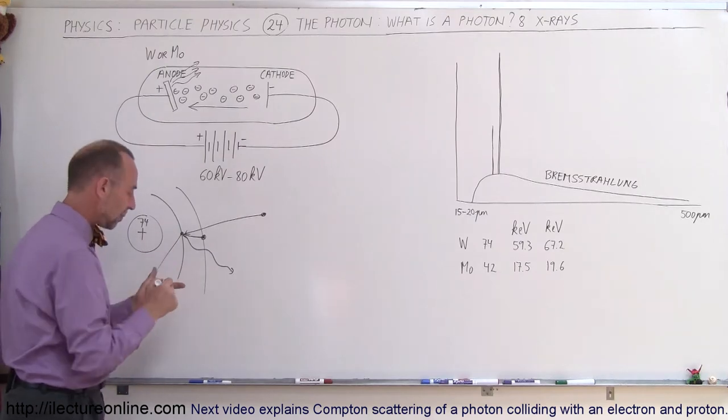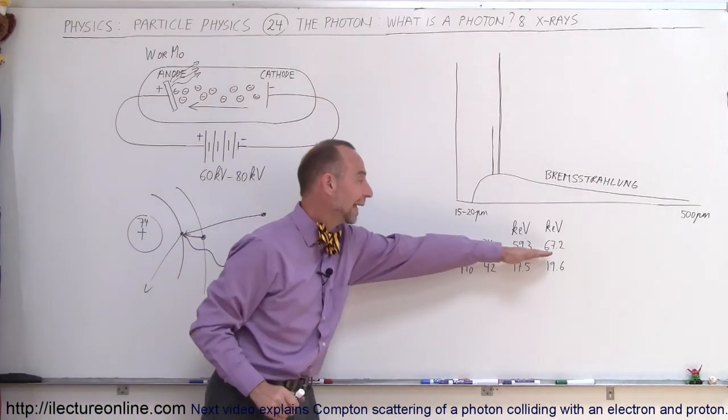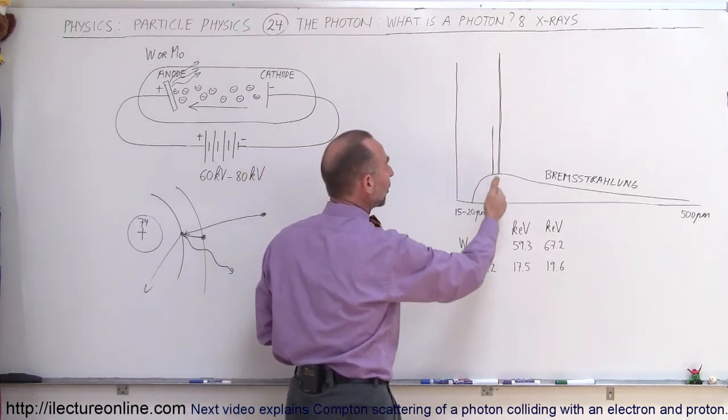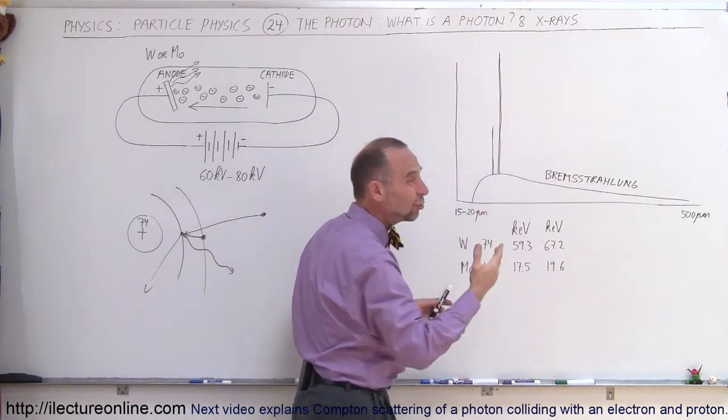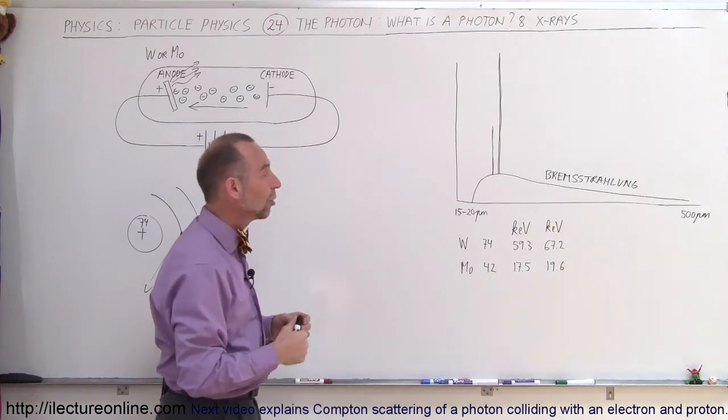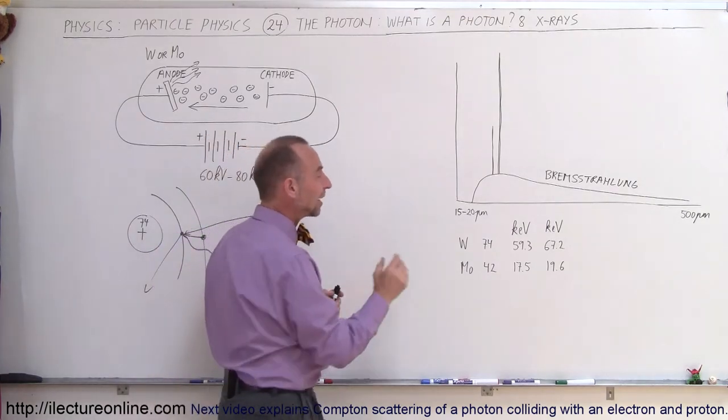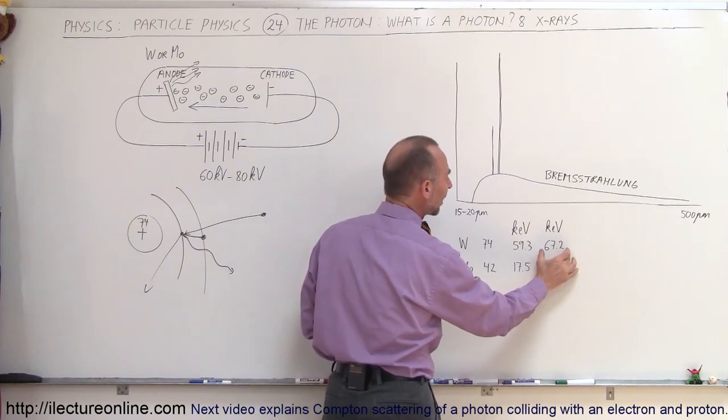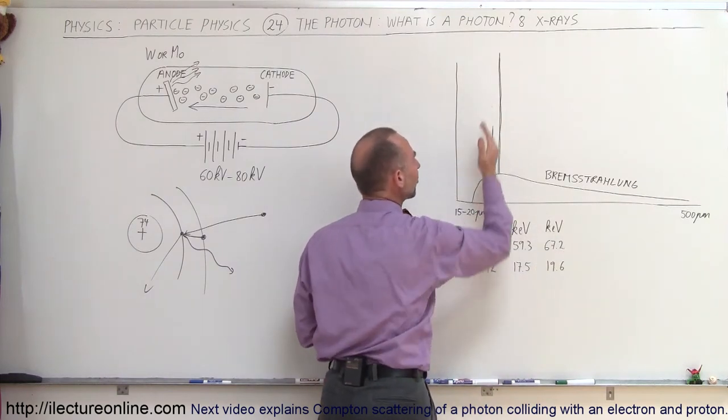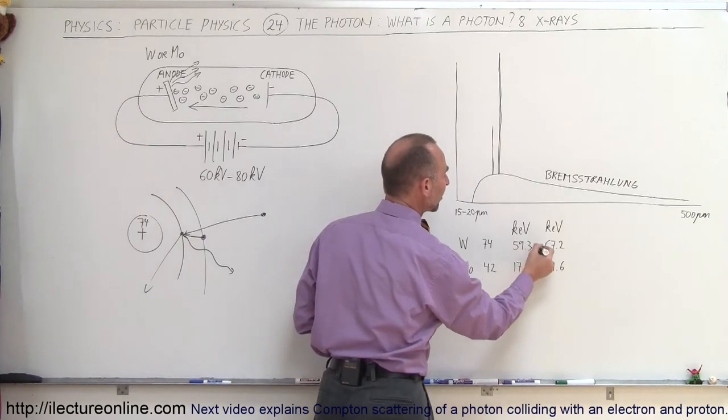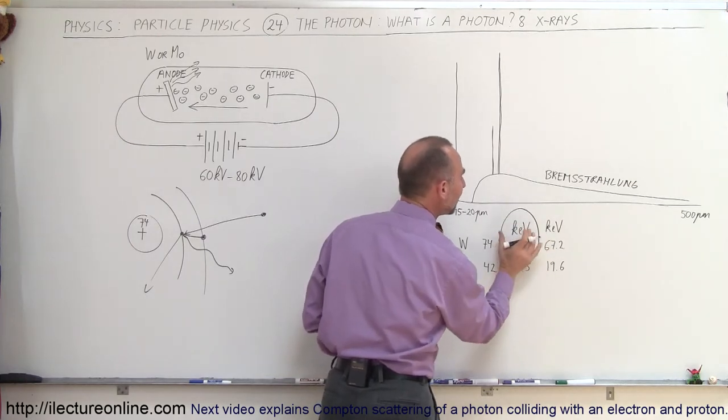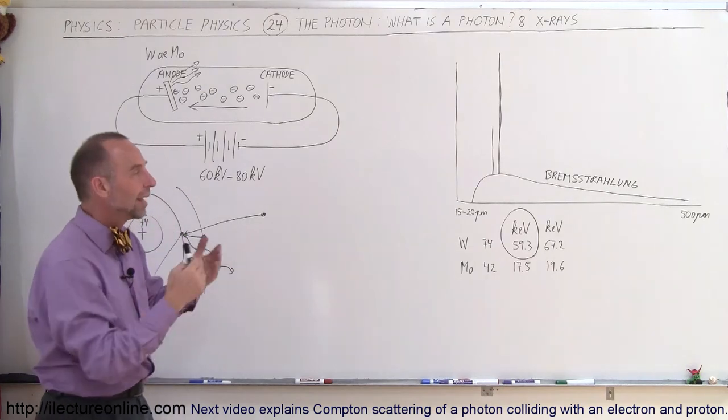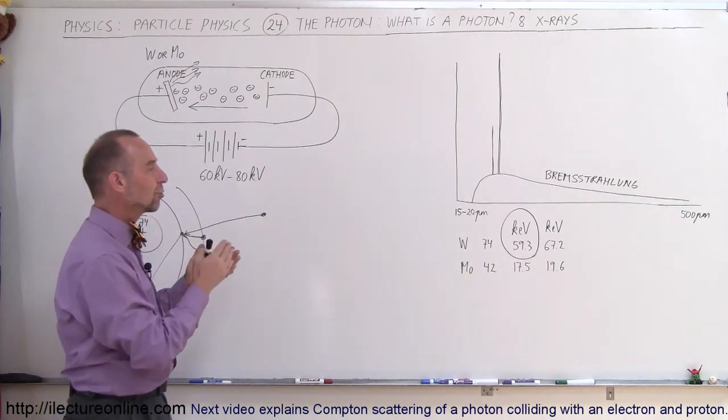That will cause then a photon to be ejected of those particular energies. And those energies then are associated with a wavelength of between 20 to 100 picometers, which is therefore an x-ray at 59.3 or 67.2 kiloelectron volts. So, it sends two beams of x-rays. This would be the predominant one and that would then be the x-ray energy produced in this particular x-ray machine.